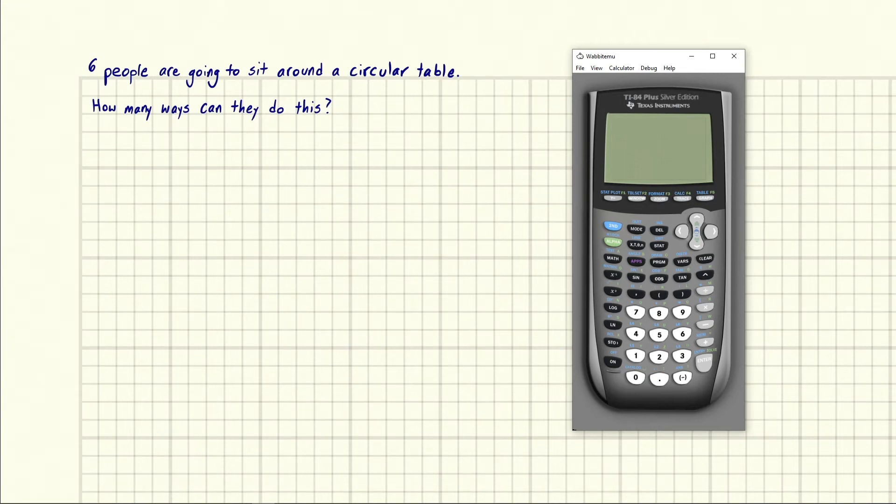Eric Burgess here. Six people are going to sit around a circular table. How many ways can they do this?